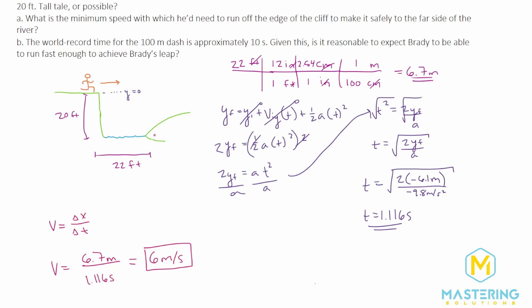For part B, the world record time for the 100-meter dash is 10 seconds. Using v equals delta x over delta t: 100 meters divided by 10 seconds gives 10 meters per second as the world record speed. Is it reasonable for Brady to run 6 meters per second? It's a little subjective — it's not like he's going 15 meters per second, which would be unrealistic. He's going a little more than half the world record speed, so yes, it's probably pretty reasonable. It's possible he could reach 6 meters per second to clear the gap.